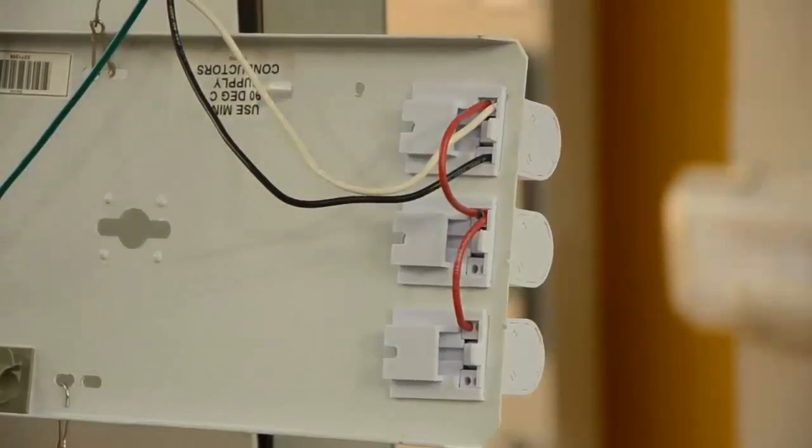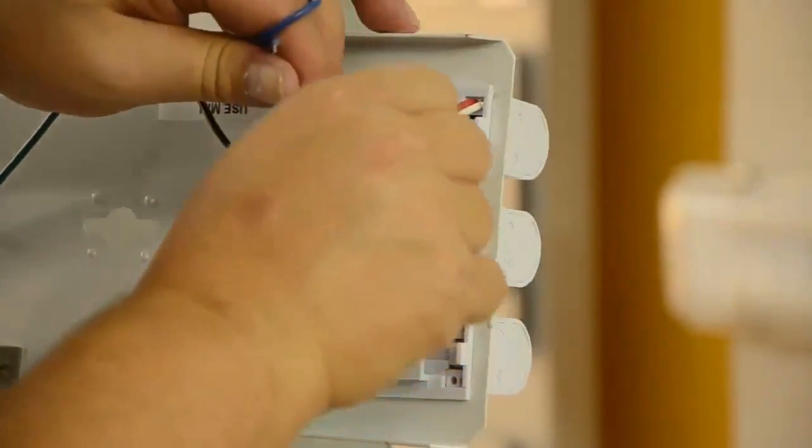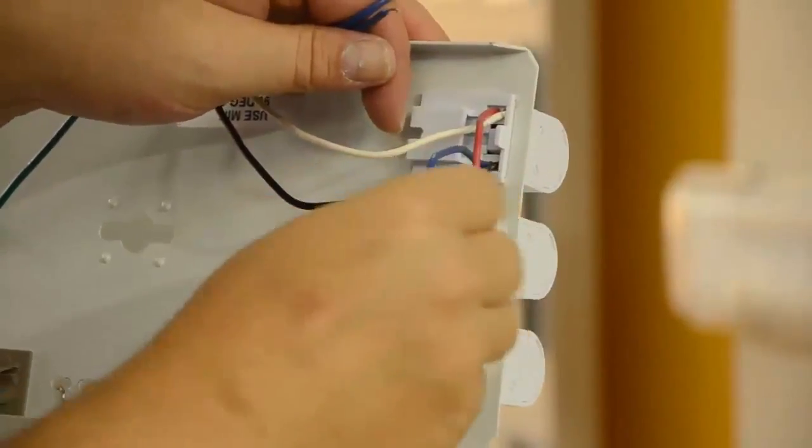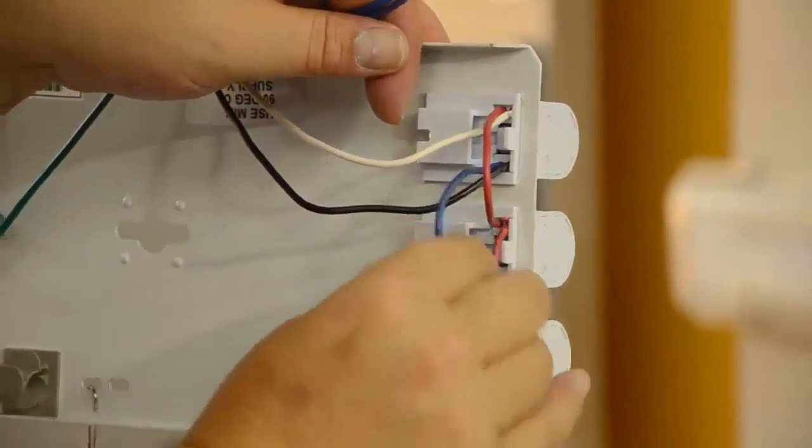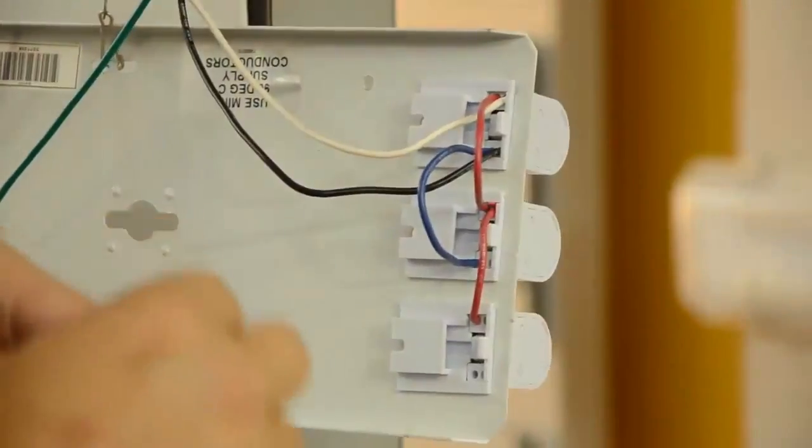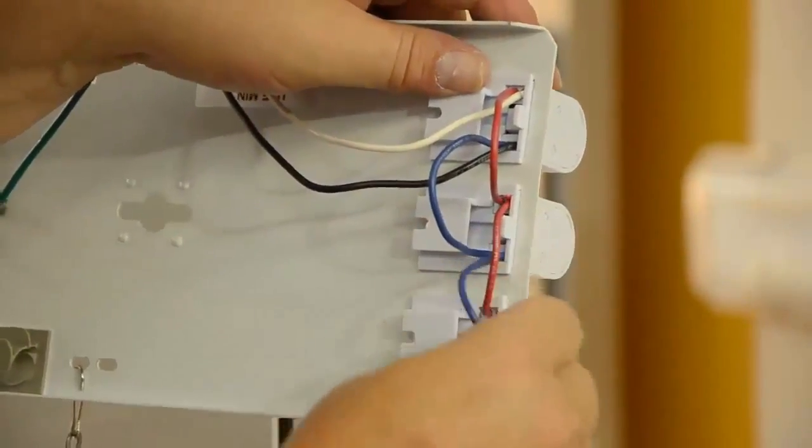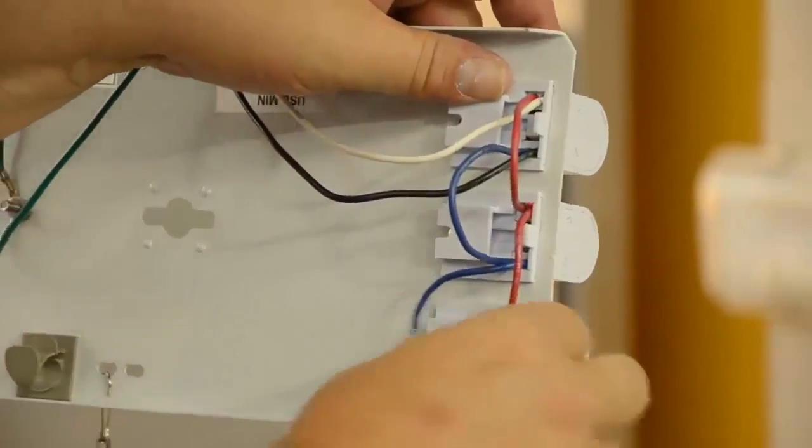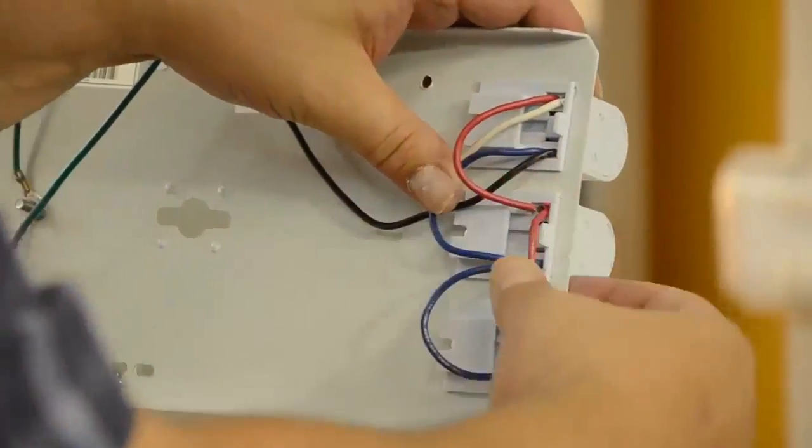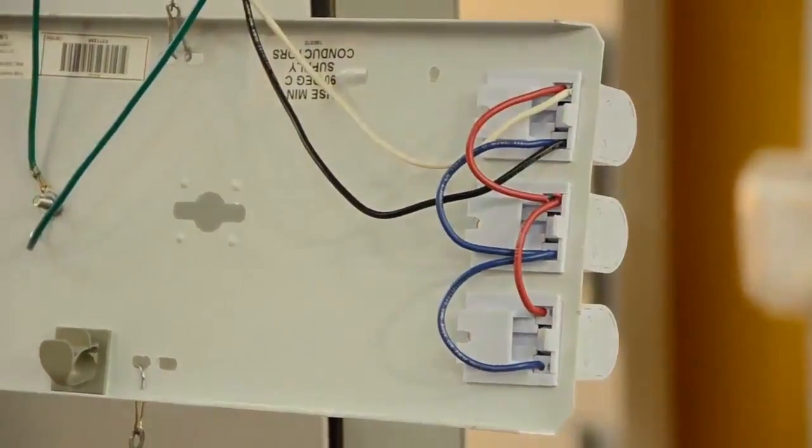Now we're going to jump our line to the line from the first socket to the second socket. And then one more time from the second socket to the third. We now have direct line voltage to all three sockets.